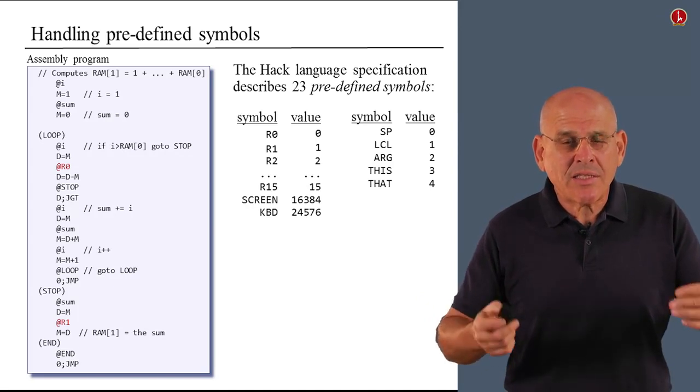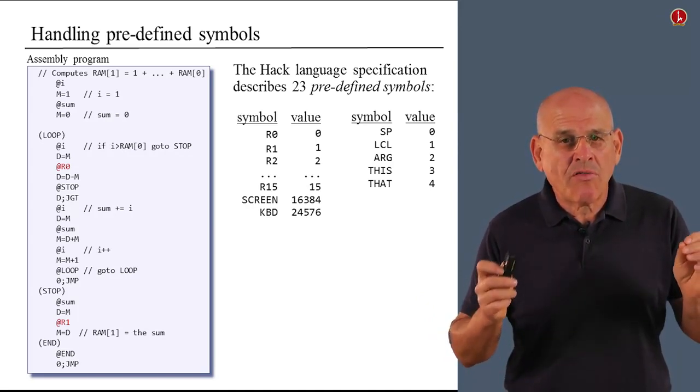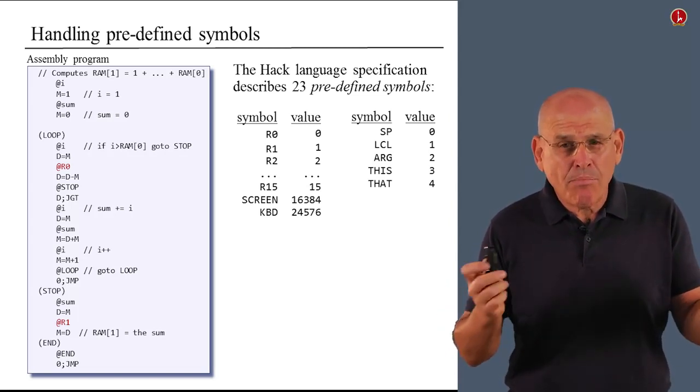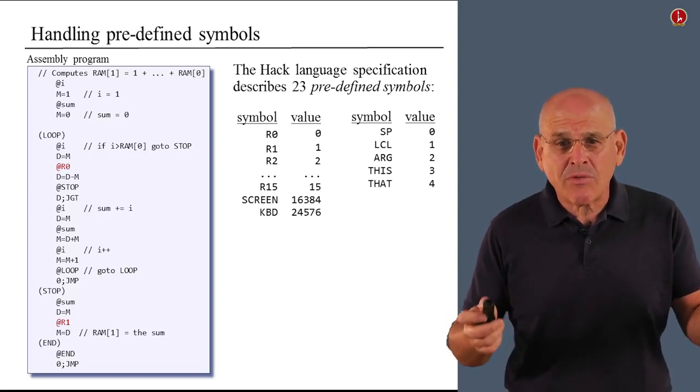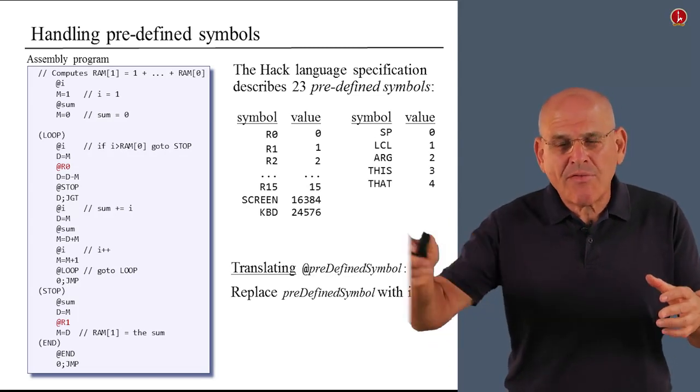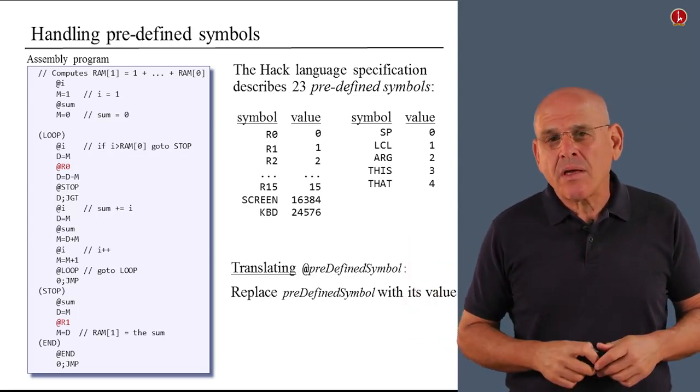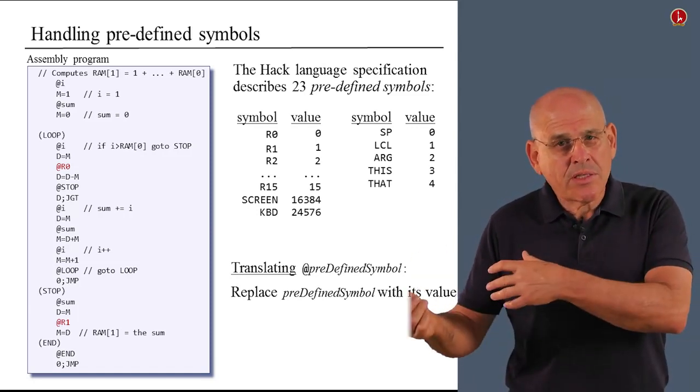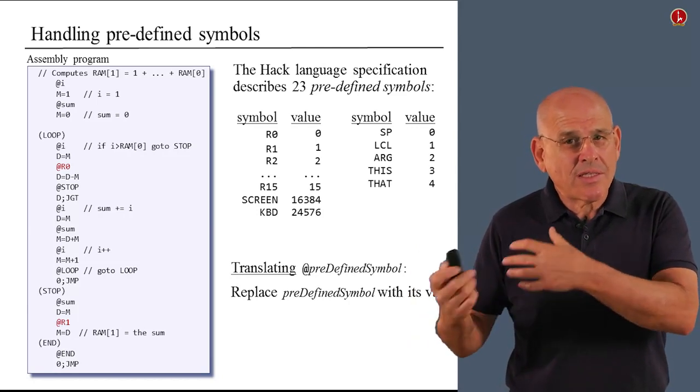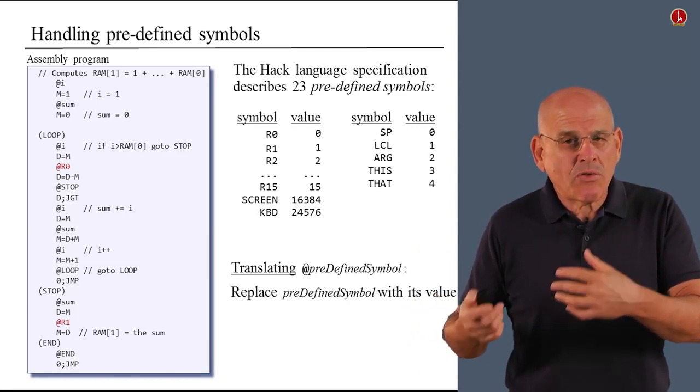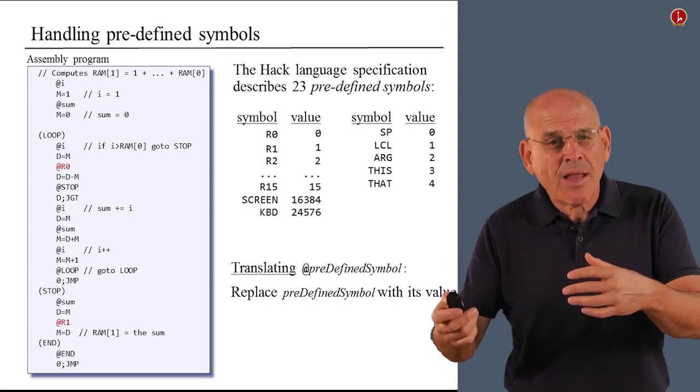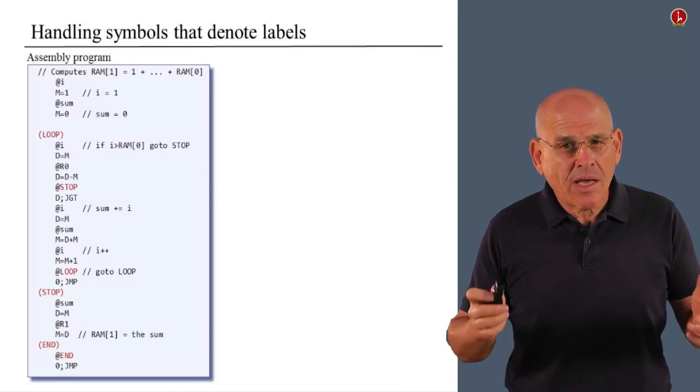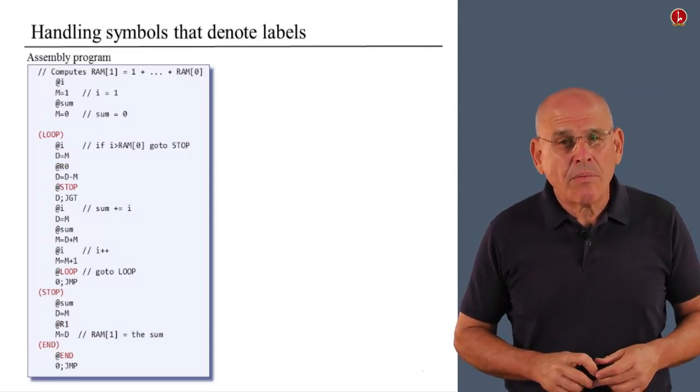How do you translate such a symbol into binary code? First of all, we have to realize that these symbols come to play only in the context of A instructions. The only place where you can see such a symbol popping up in a program is an instruction like at predefined symbol. How do you translate this instruction into binary? Well, you simply replace the predefined symbol with its corresponding value, which is a decimal number. And now the only thing that remains is to translate the at decimal number into binary. This is something that we discussed in the previous unit. So, case closed. We know how to handle predefined values.